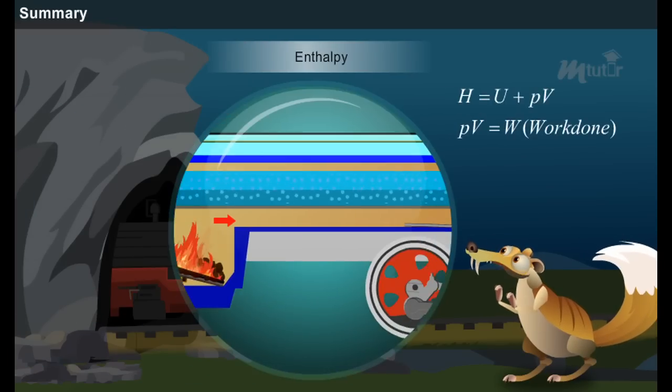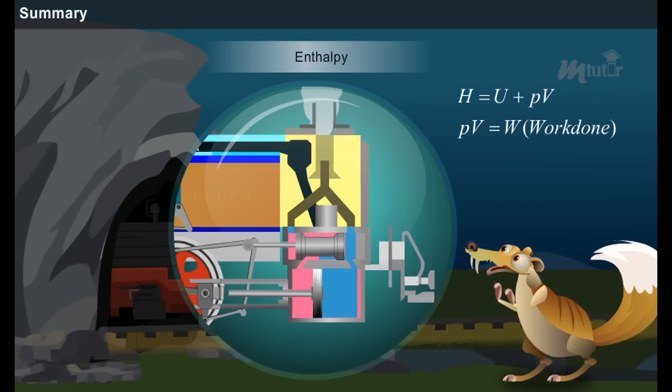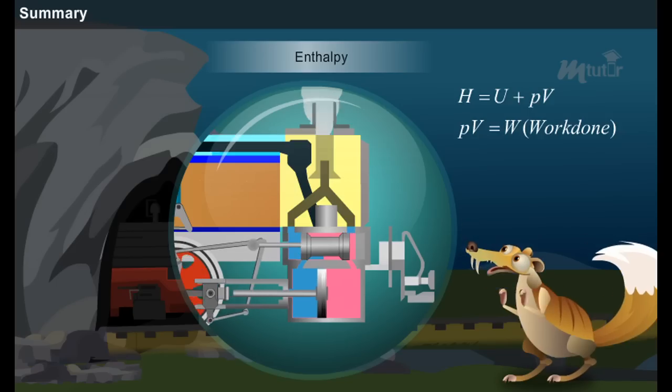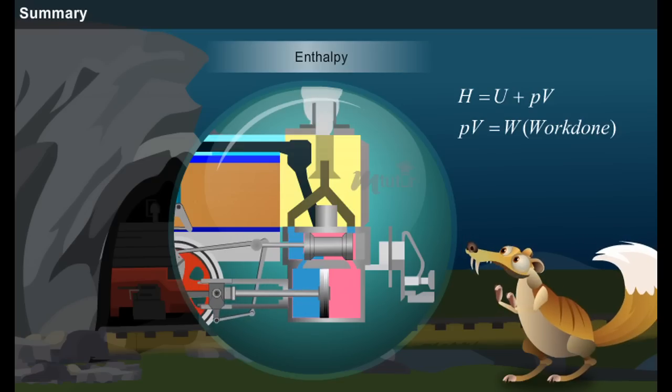Enthalpy is the total heat content of a system, that is the total internal energy and work done. It can be denoted as H, where product P and V indicates the work done by the system.